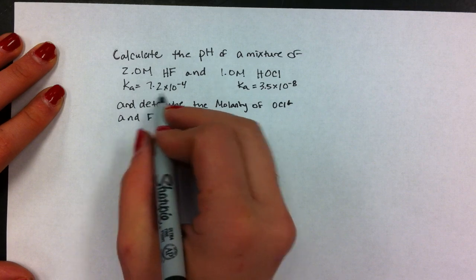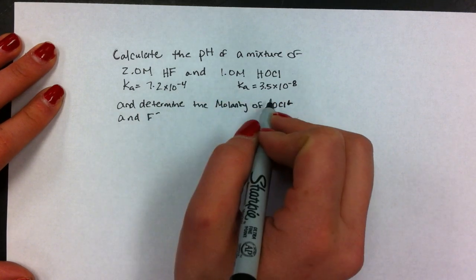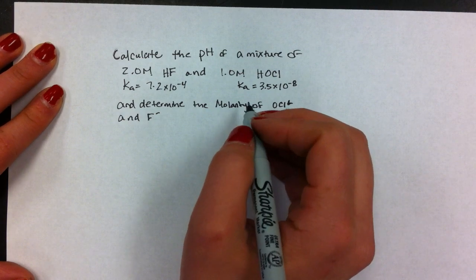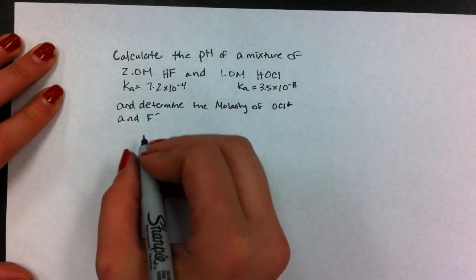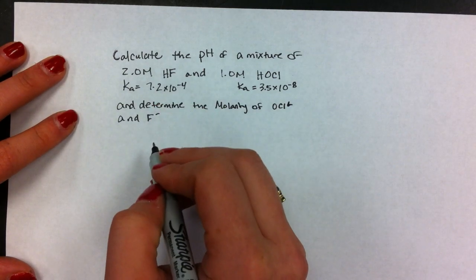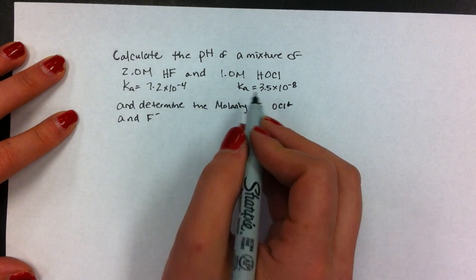First, we see that the Ka of hydrofluoric is much bigger than the Ka of hypochlorous. So we're going to use that one to figure out H+, because the Ka is so much bigger that the H+ from hypochlorous will be negligible.